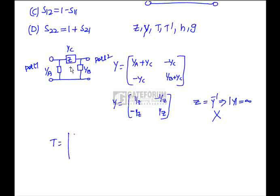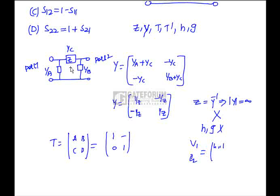Taking T parameters: this is just like a short transmission line. T parameters (ABCD) equal [1, Z; 0, 1]. Similarly, H and G parameters also cannot be found. For H parameters: [V1; I2] = [H11, H12; H21, H22][I1; V2]. Writing the relations confirms that H parameters and G parameters also cannot be found. So T parameters equal [1, Z; 0, 1].